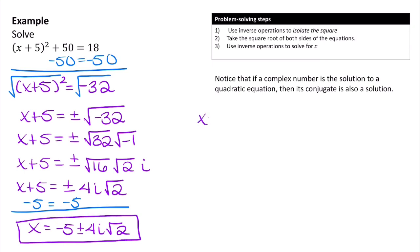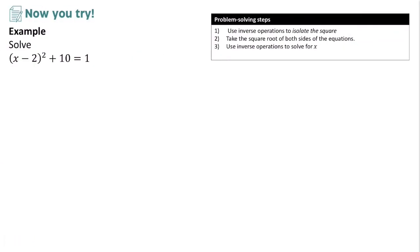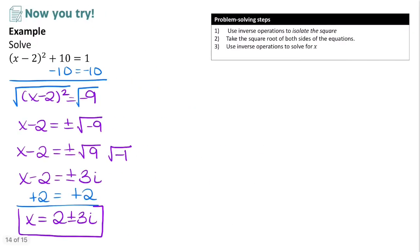Notice the relationship between these two solutions: x equals negative 5 plus 4i square root of 2, and x equals negative 5 minus 4i square root of 2. If a complex number is a solution to a quadratic equation, then its conjugate will also be a solution. For the practice problem: subtract 10 from both sides to get x minus 2 squared equals negative 9, take the square root to get x minus 2 equals plus or minus 3i, then add 2 to both sides for x equals 2 plus or minus 3i.